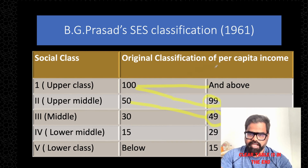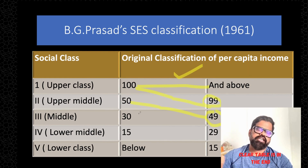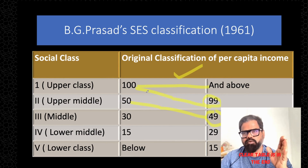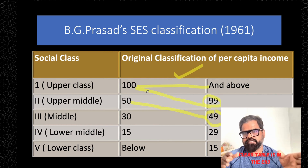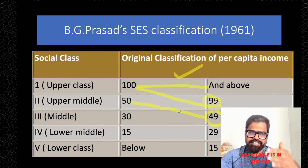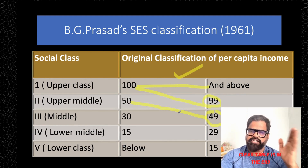It is easy to remember: start with 100, the next class upper limit is one less so it becomes 99, lower limit 50; next class is 49 down to 30; then 29 down to 15; and below 15 is the lowest. This is the original classification of BJ Prasad used in 1961. Subsequent corrections have been made based on Consumer Price Index — in 1982, 2001, and 2016 — using linkage factors.